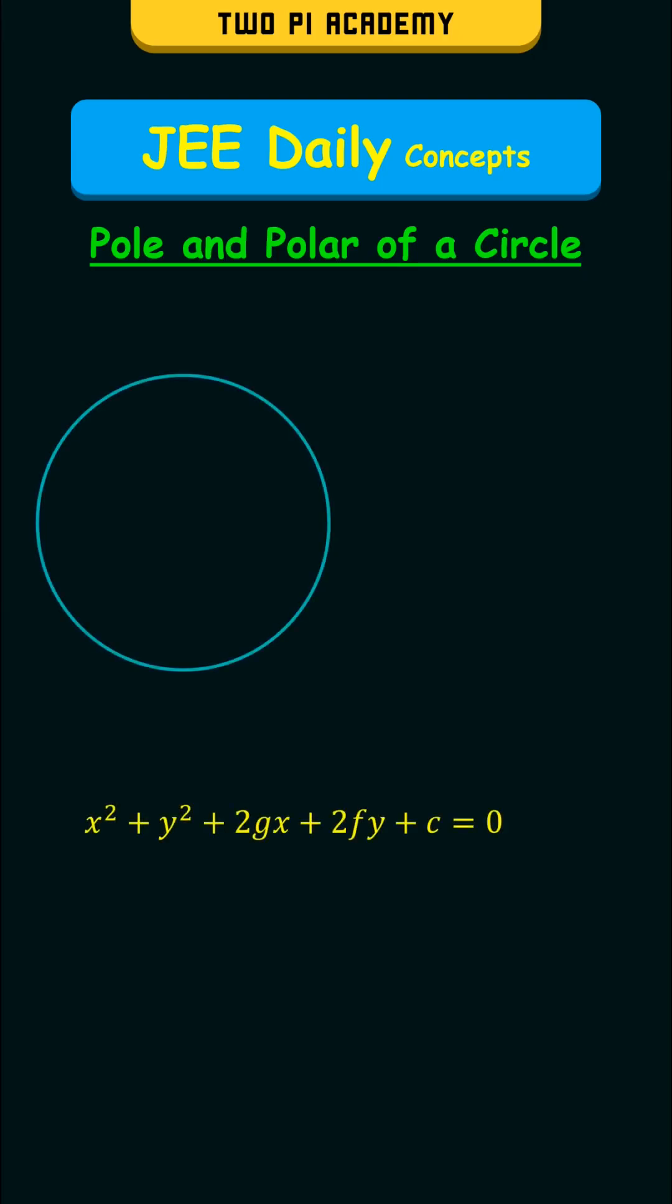Consider a circle given by the following general equation and a point inside it P. Then through this point, you can draw infinite chords to the given circle.